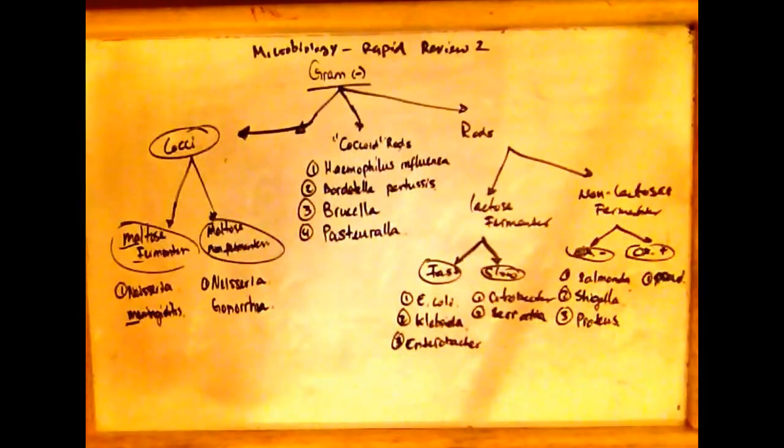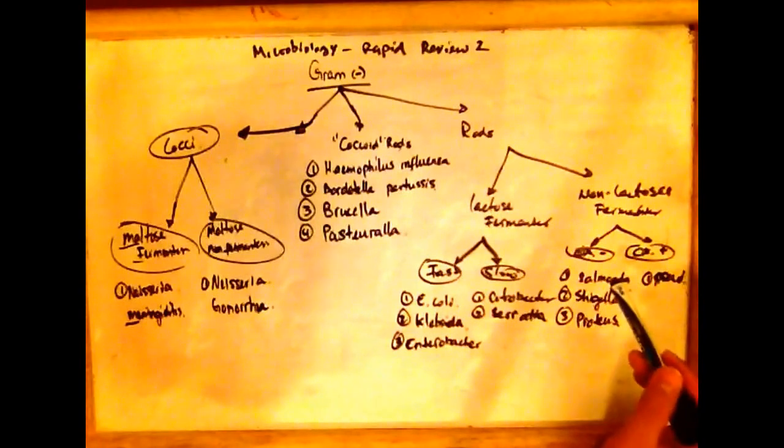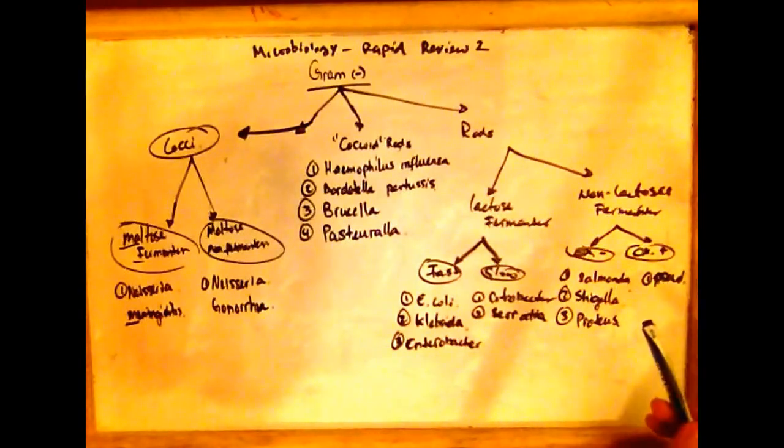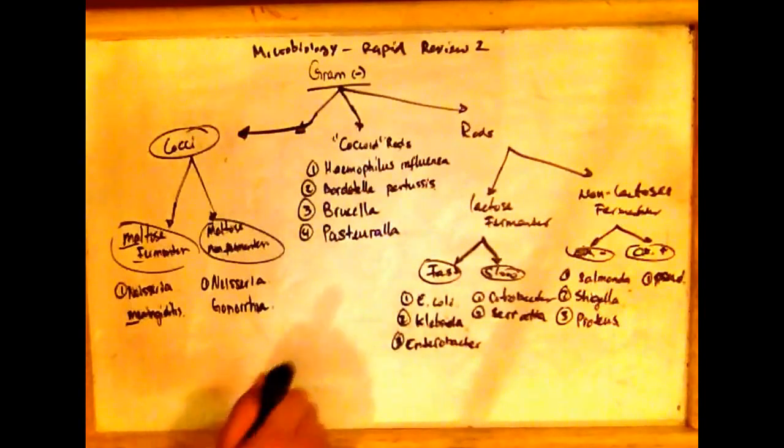And the non-lactose fermenters, for them we can divide them even further as to those that are oxidase positive and those who are oxidase negative. Those oxidase positive are Pseudomonas, oxidase negative we have three, which are Salmonella, Shigella, and Proteus.